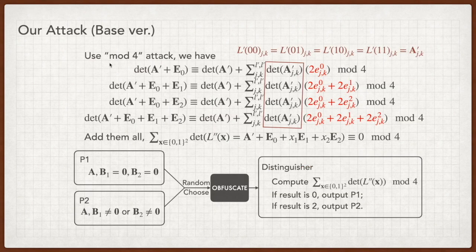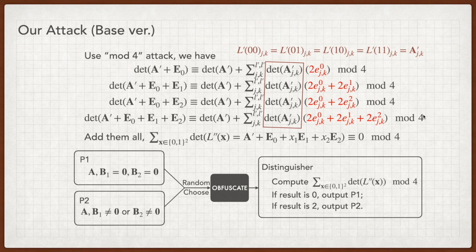Then we use the aforementioned mod 4 attack. We have four equations. Although the RLS helps hide the information of this term, we know that these four terms are equal to each other due to the property. Therefore, we can combine the noise terms, which are marked in red color. Evidently, the summation of these terms is congruent to 0 mod 4. Thus, we can attack the scheme by choosing these two programs. For P1 prime the equation always holds, while for P2 prime the equation holds with probability 1 half.